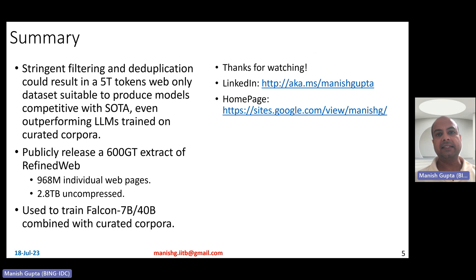In summary, we talked about the refined web corpus, which basically involves a macro data filtering pipeline, which does stringent filtering and deduplication that results in a 5 trillion token web-only corpus obtained from common crawl suitable to produce models that are competitive with state-of-the-art performance. Sometimes they even outperform the large language models trained on curated corpora like the pile. They have publicly released a 600 giga tokens extract of the refined web, which basically consists of about 968 million individual web pages. And if you download it, it's basically 2.8 TB uncompressed. This data set, refined web data set, along with some curated corpora, has been used to train Falcon 7 billion and Falcon 40 billion models, which are at the top of the open LLM hugging face leader board. Hope you liked the video. Thank you for watching. Connect with me on my LinkedIn or look at my research on my homepage. Thank you.